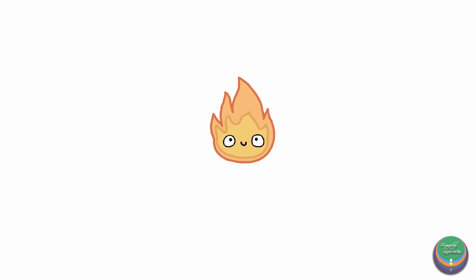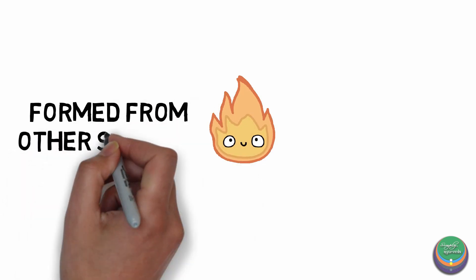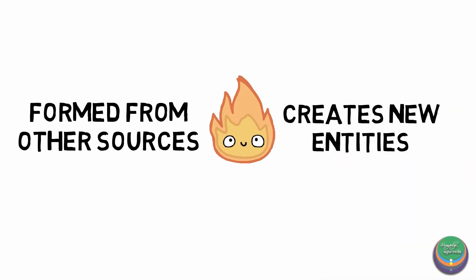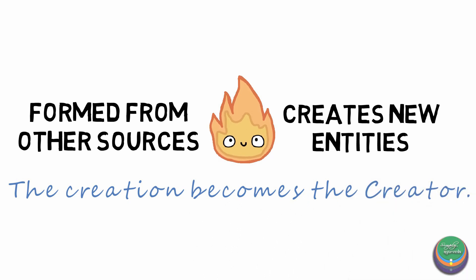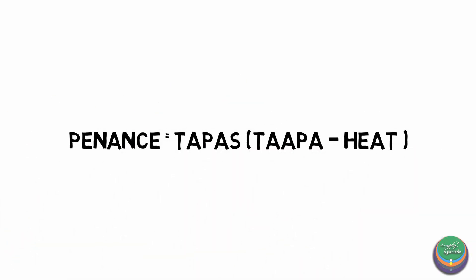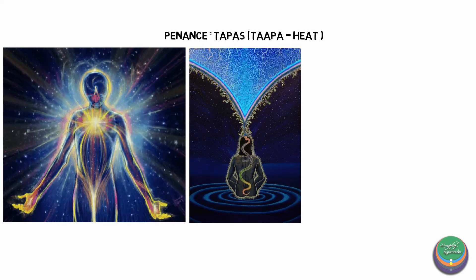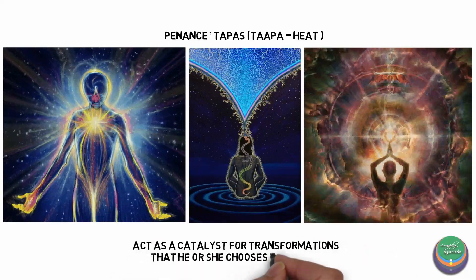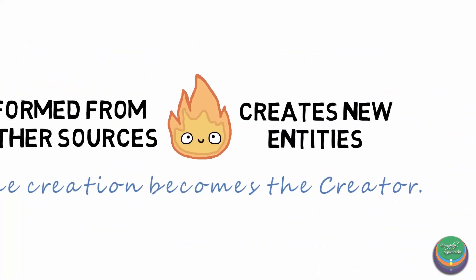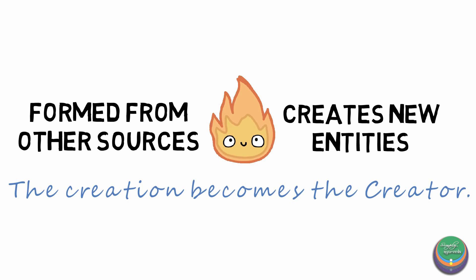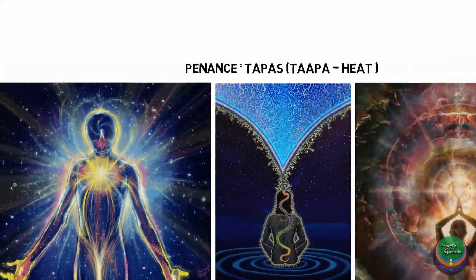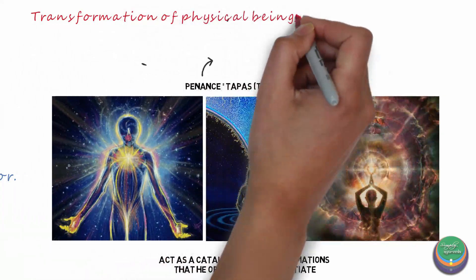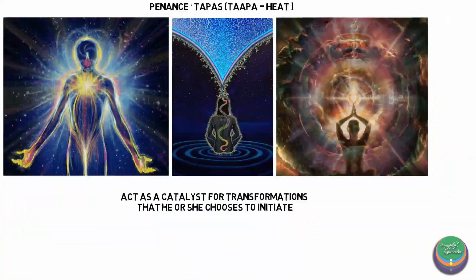Agni is a mind-boggling element as it is both an element formed from other sources and also a catalyst for transformation and creation of new entities — an example where the creation itself becomes the creator. When an individual does tapas, they become capable of producing a state of energy which enables them to be independent of the energies around them, acting as a catalyst for transformation — similar to Agni. The word tapas itself includes 'tapa' or heat, the key attribute of Agni. Hence during tapas, transformation from physical beings to realized beings takes place by virtue of Agni Tattva.